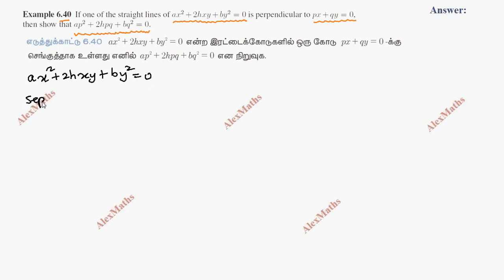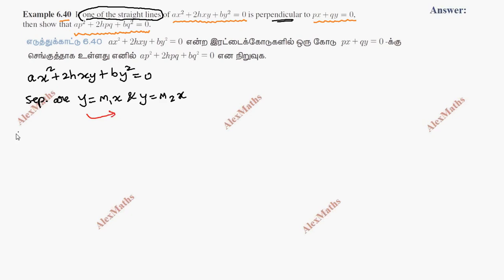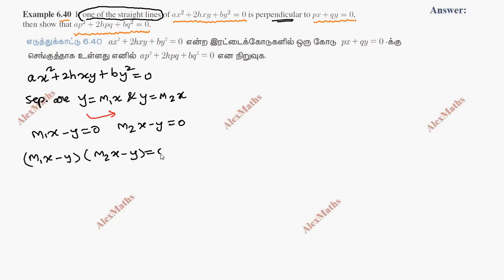The separate equations: we assume y equal to m1x and y equal to m2x. Assume one of the straight line's separate equations — one of the straight lines is perpendicular. If lines have a y term, we will see m1x minus y equal to 0.